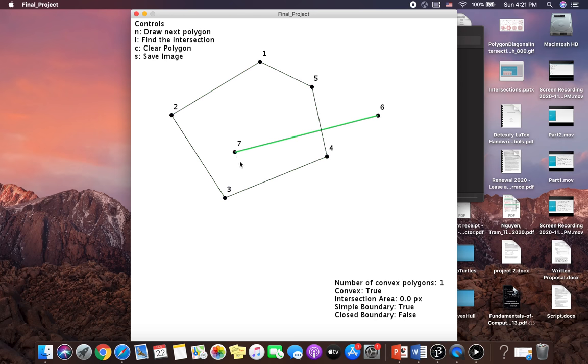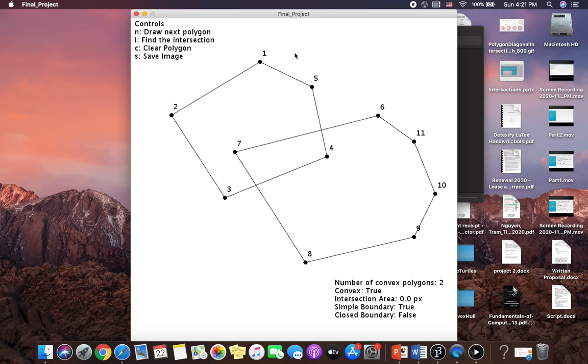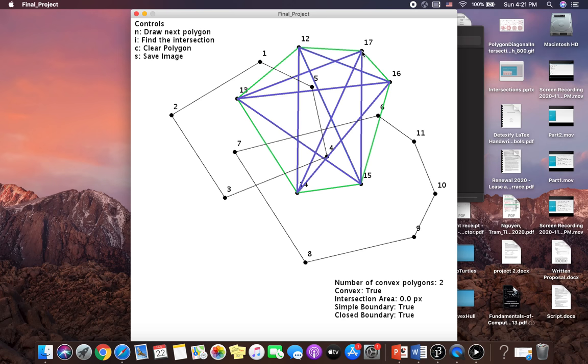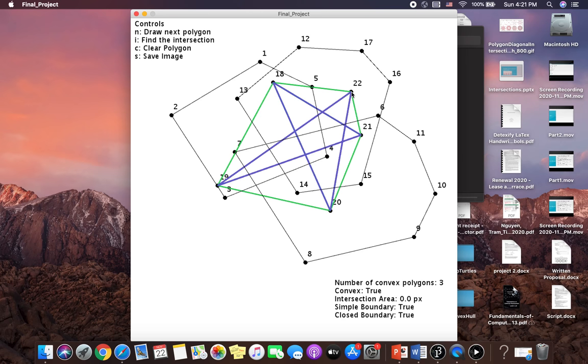Then I can draw the next polygon. If I'm happy with it, I'll press N to continue drawing the next one. Okay, now I'm happy with what I have, and I'll press the letter I to find the intersection of all of these polygons.